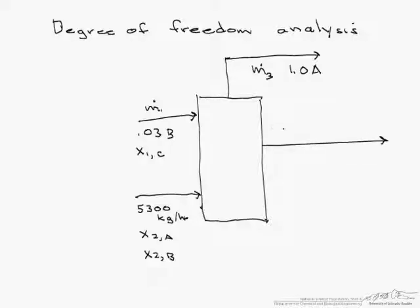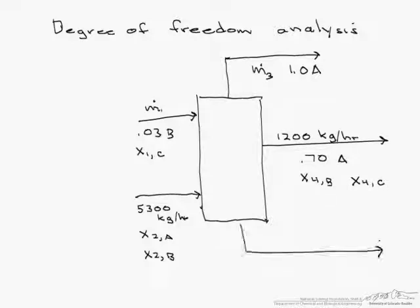Then from the middle of the column I have a mass flow rate of 1200 kg per hour that has a mass fraction of 0.7a then some mass fraction of b and some mass fraction of c.